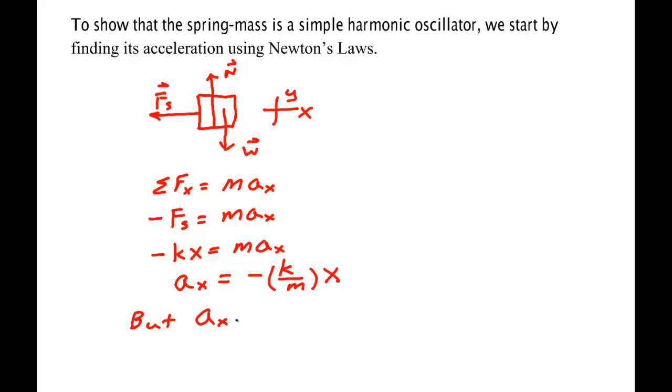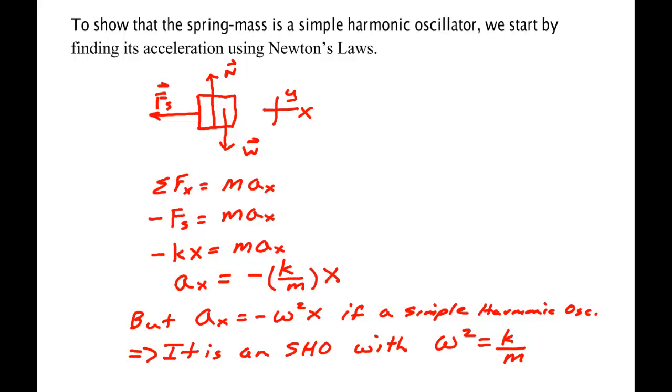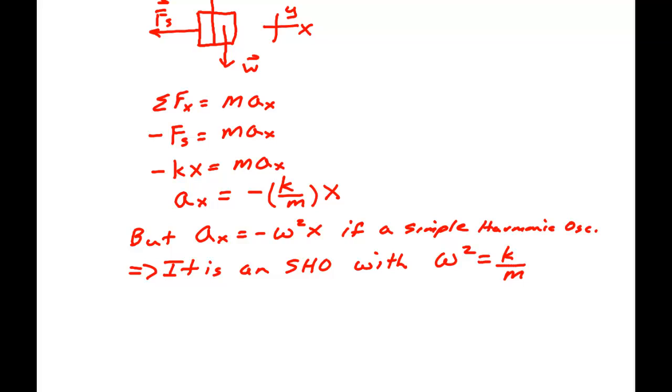But a_x equal minus ω squared x if a simple harmonic oscillator. Well, if we look at this equation required for a harmonic oscillator and we look at that equation above, we see that they would be exactly the same if k over m was ω squared. Therefore, it is an SHO with ω squared equal k over m. So our first equation is relatively simple to pick up. And then ω is the square root of k over m because it's just the square root of ω squared.